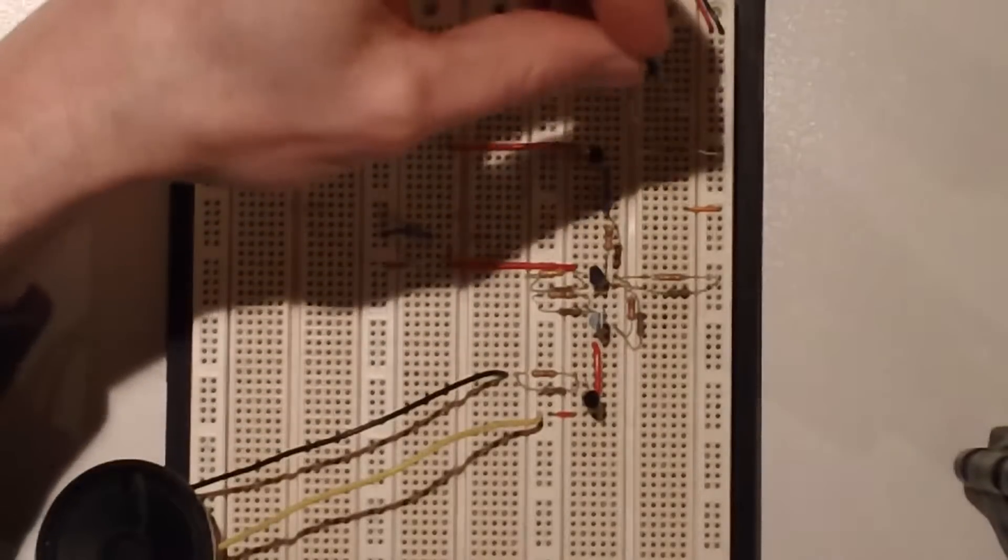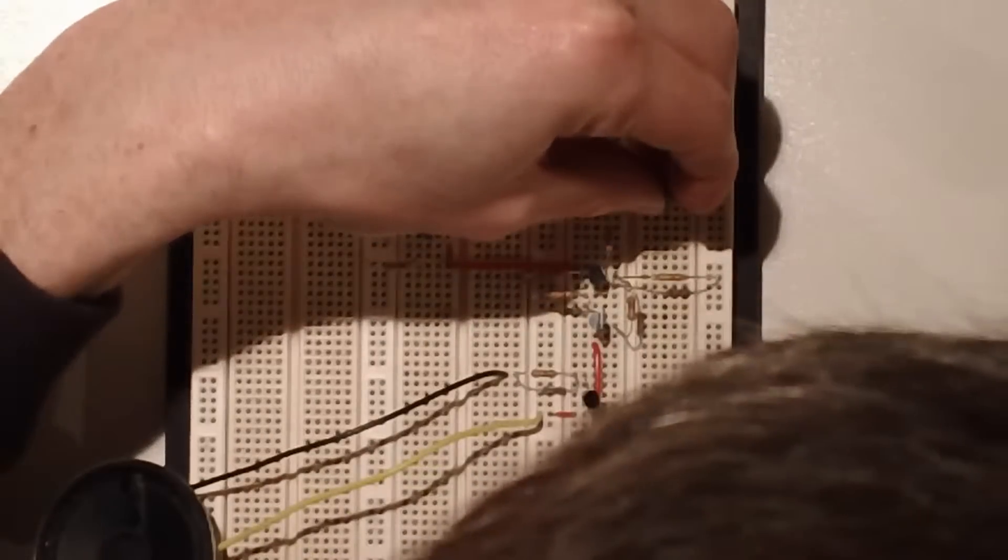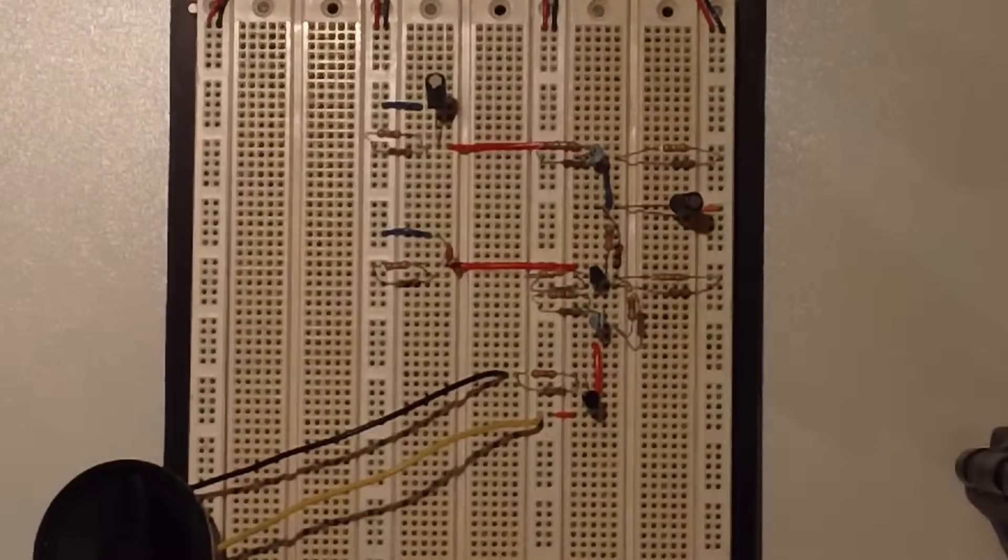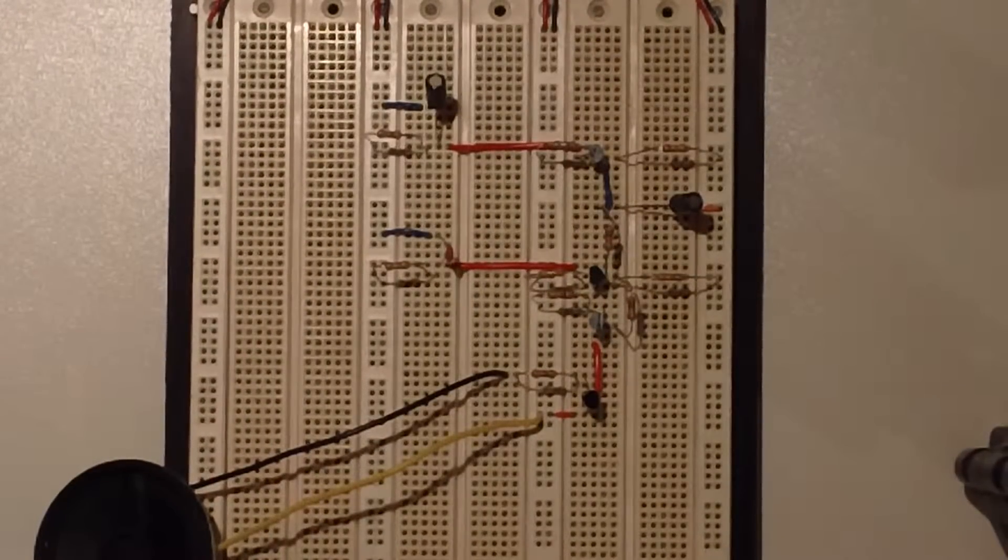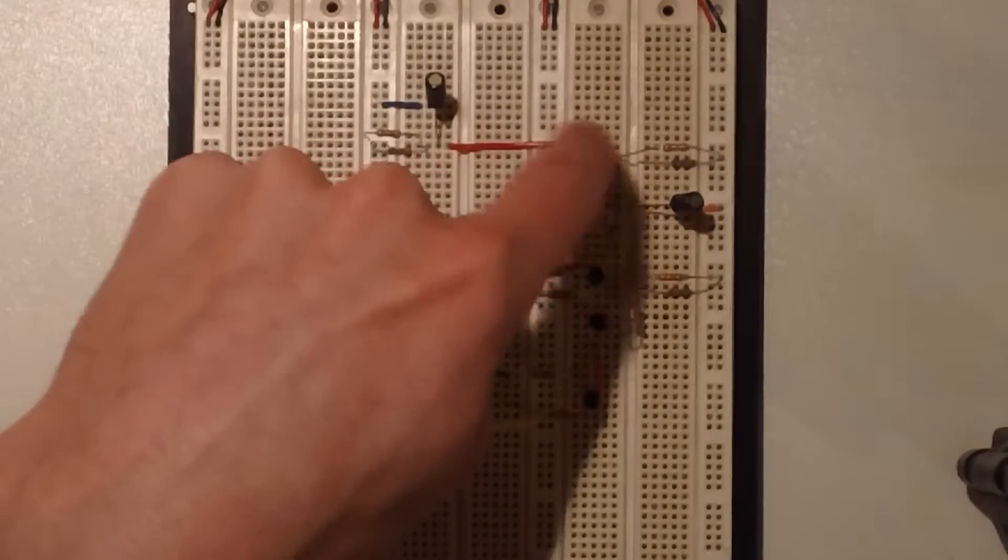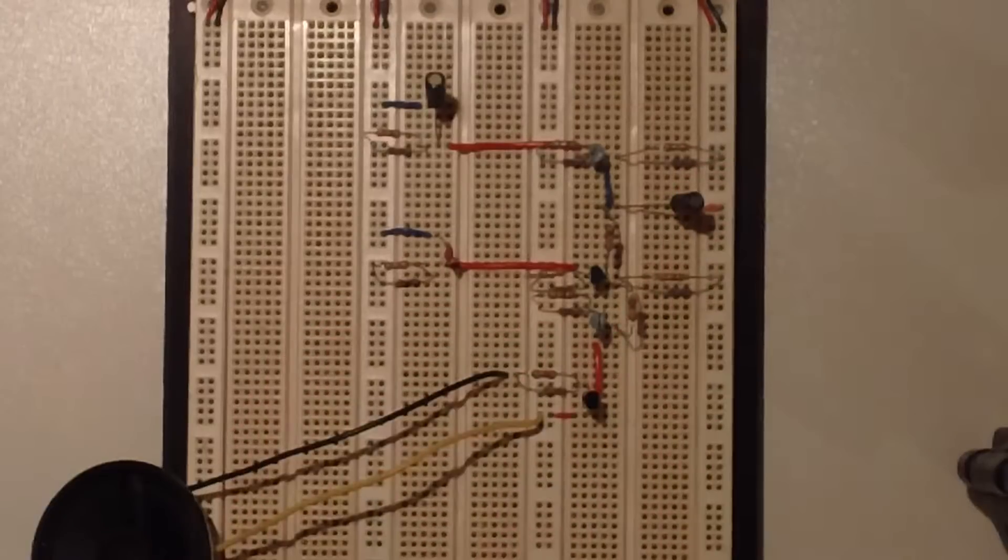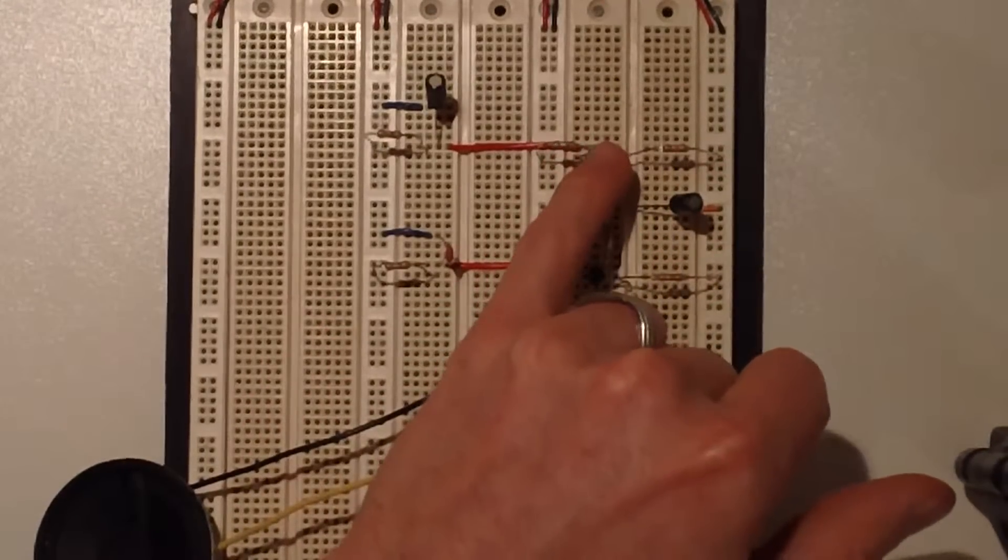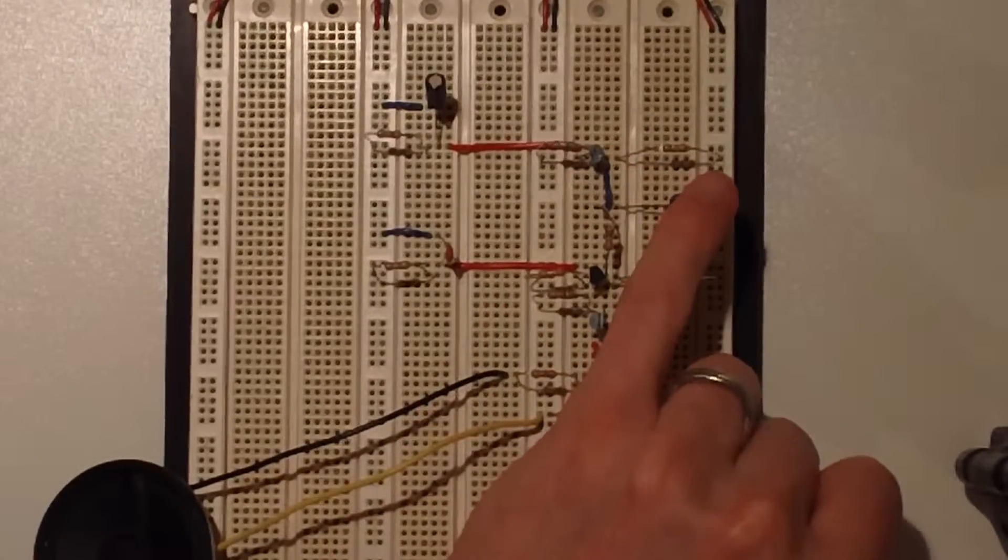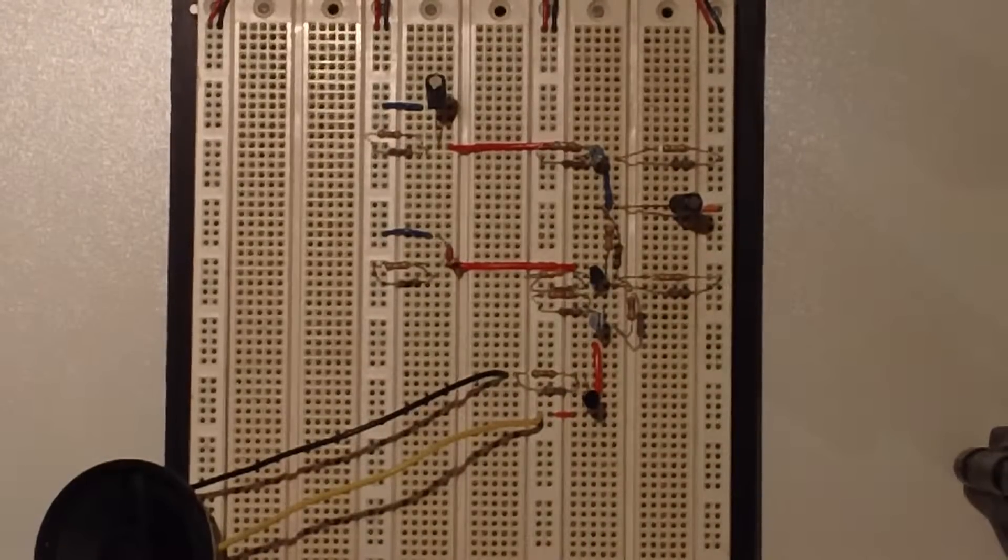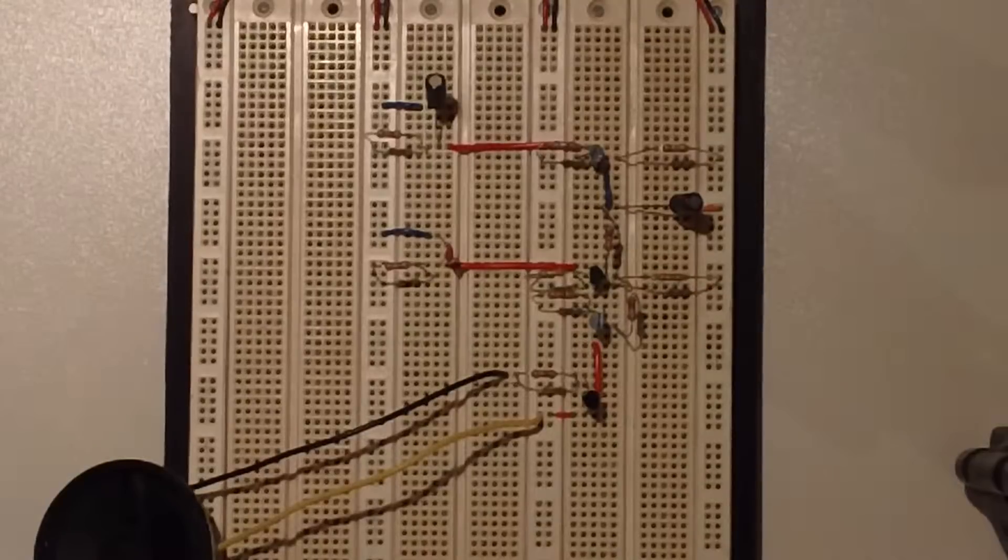So if we throw this extra 2.2 microfarad capacitor in parallel so that it sits right there, what we're doing is creating a path so that while electrons are flowing through here in the normal discharge pattern from that first PUT. We're also charging this capacitor up to the voltage that is outputted from here. And so this guy ends up quickly discharging. I think it's like two and a half or three volts or something like that. In fact, we can check that.